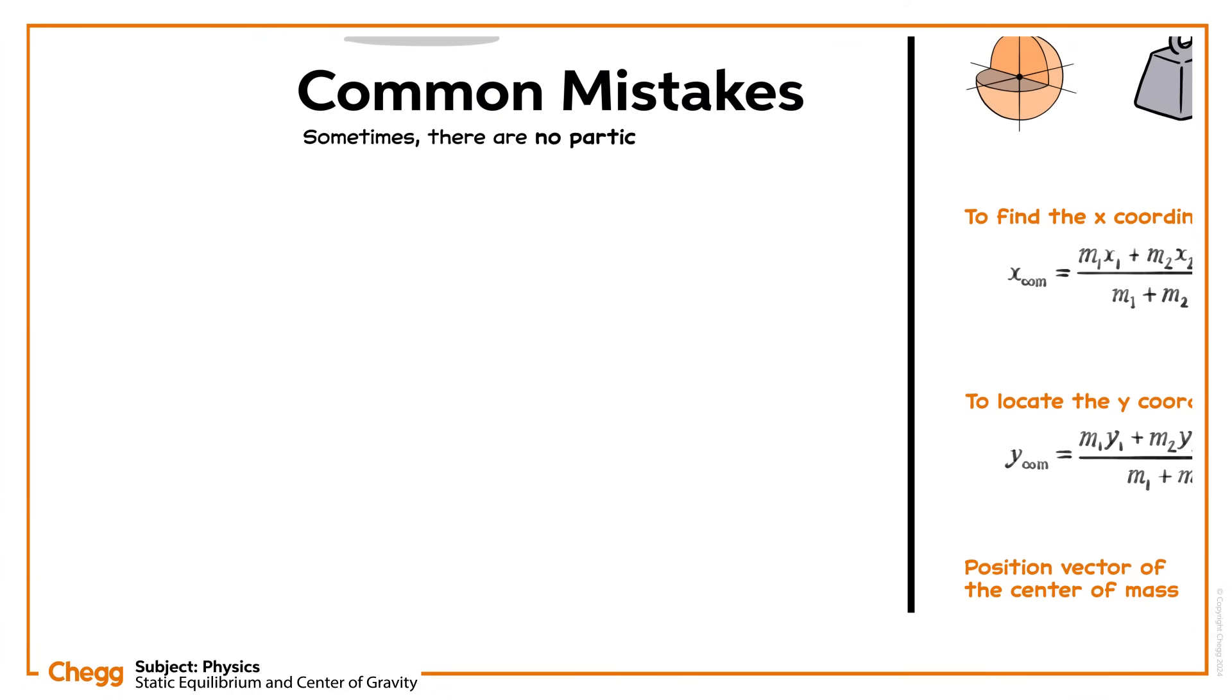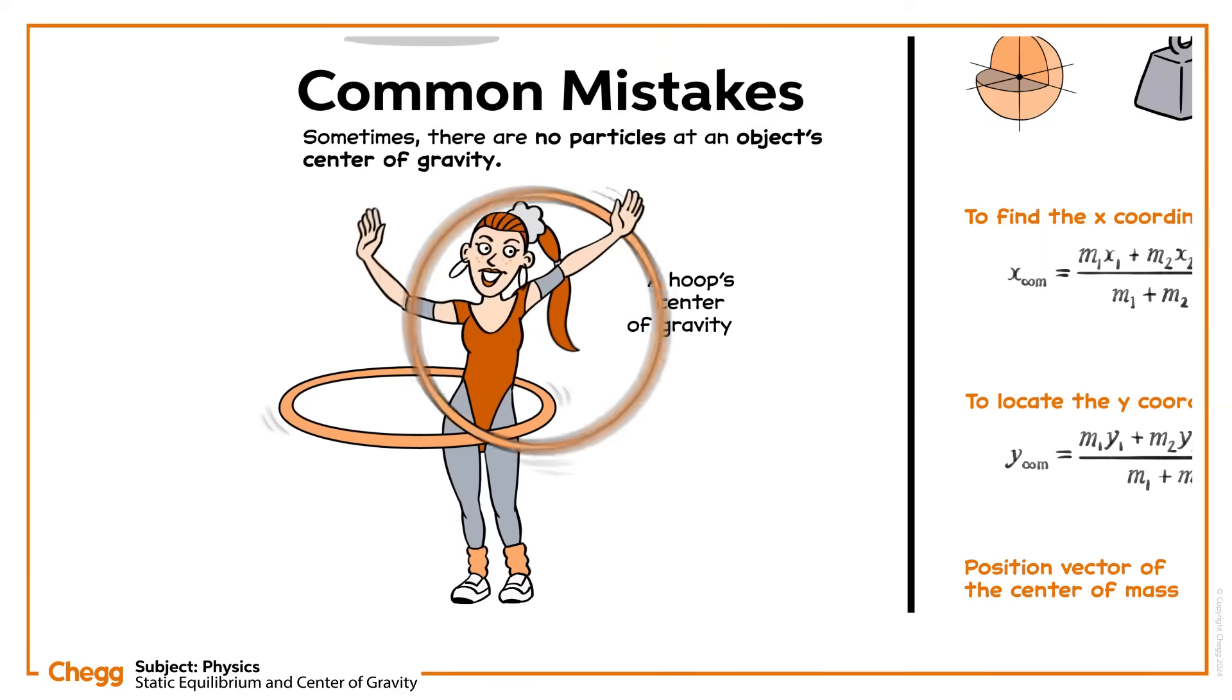Sometimes there are no particles at an object's centre of gravity. For example, a hoop's centre of gravity is in the middle of the hole.